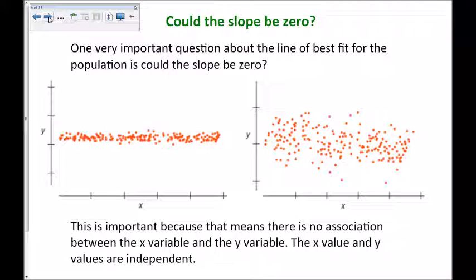Now, a very important question we can ask about this line of best fit for the population is, could the slope be zero? That's an important question, because if the slope could be zero, then there would be no association between the x variable and the y variable. It doesn't matter what x is, y is always going to be about the same thing. And that means the x and the y values would be independent. It's an important question for us to ask.